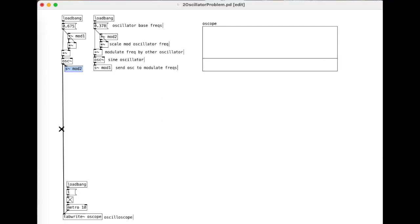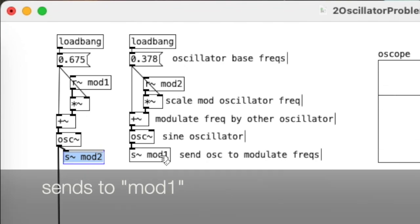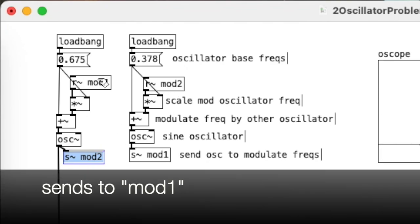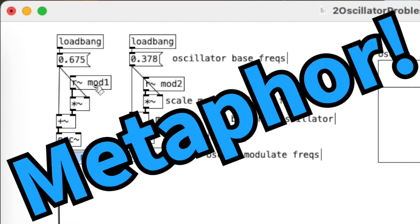...as well as going to the oscilloscope, gets sent to S mod, which is received here, and this one gets sent to R mod. And so what these are each doing is they're frequency modulating each other. So my first modulator sends and frequency modulates my second oscillator, which also sends and frequency modulates my first. So metaphorically, these two oscillators have a gravitational pull on each other.